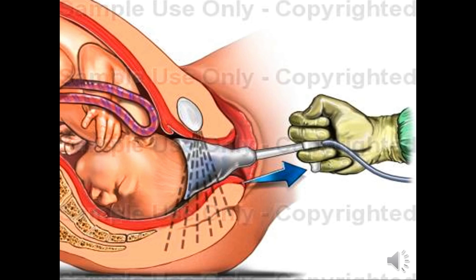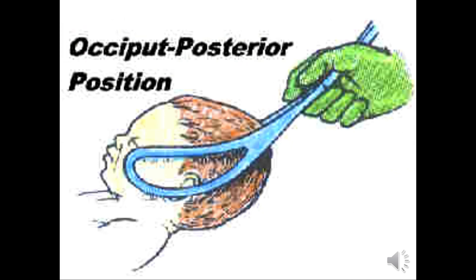As demonstrated here, vacuum extraction is performed by applying negative pressure to the fetal head, or rotation and extraction can be performed by Kielland forceps. Thank you for listening.